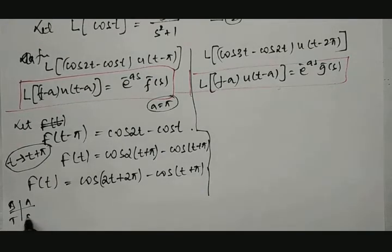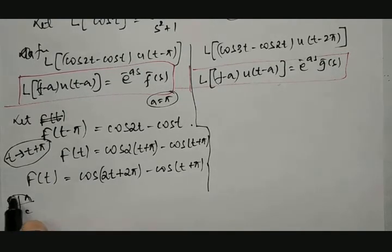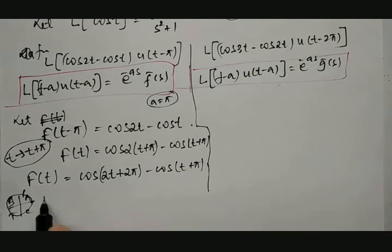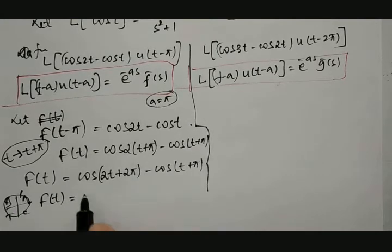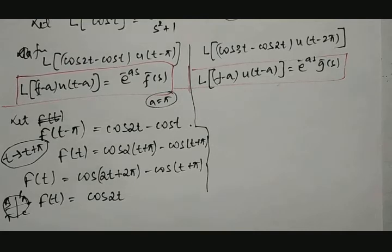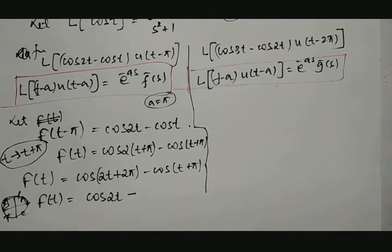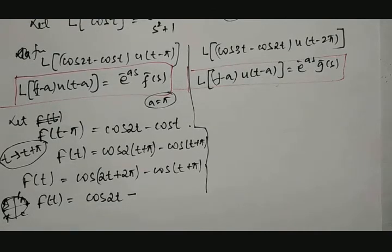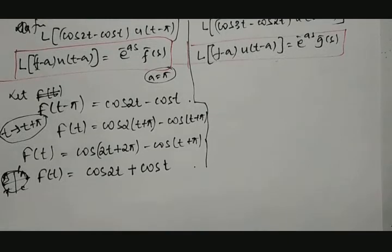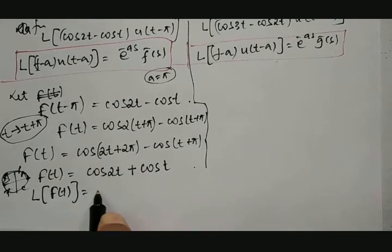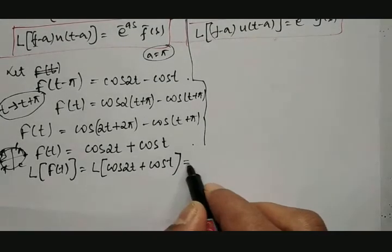Applying the ASTC rule: cos(2t + 2π) = cos 2t, since 2π is 4 × 90° and cos is positive in the equivalent quadrant with even multiples. And cos(t + π) = −cos t, since π places us in the third quadrant where cos is negative. So f(t) = cos 2t + cos t. Applying Laplace on both sides gives L{f(t)} = L{cos 2t} + L{cos t}, which we call F̄(s).